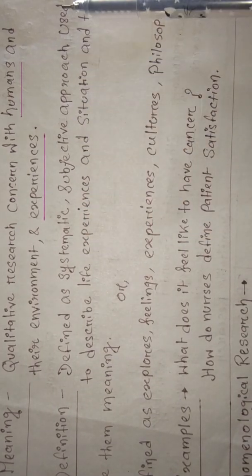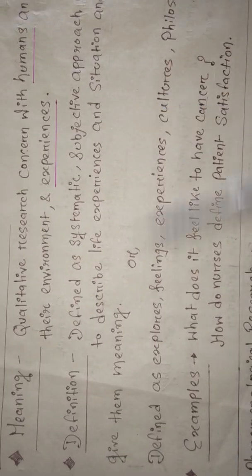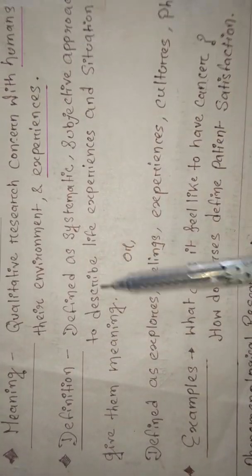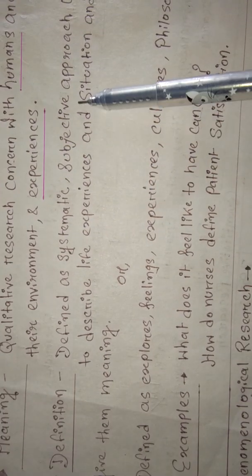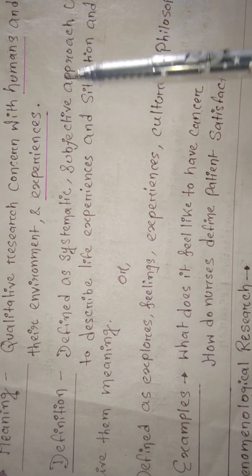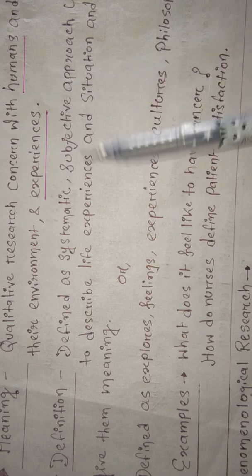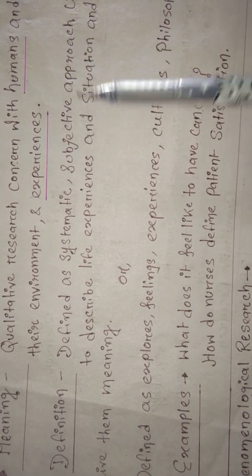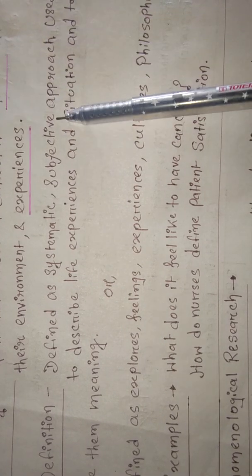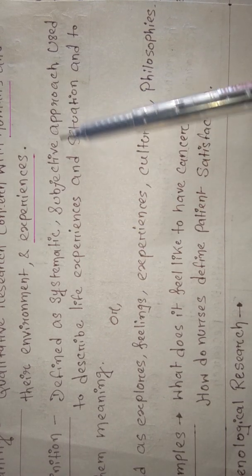Qualitative research is defined as a systematic subjective approach used to describe life experiences and situations, and to give them meaning. It is a systematic way of doing research. Subjective approach means approaching someone's feelings, someone's experience, someone's opinion - a particular person's feeling, opinion, judgment.